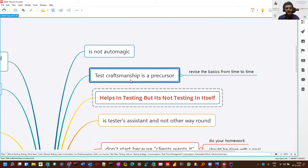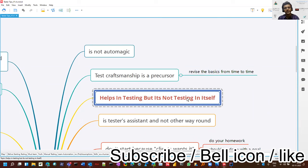Test craftsmanship is a precursor. You need to revise your basics. Your testing should be strong. Why? Because automation helps in testing, it's not testing in itself. It makes the execution fast, but it's not testing. It's just doing the test execution fast.